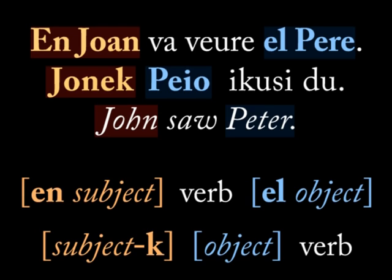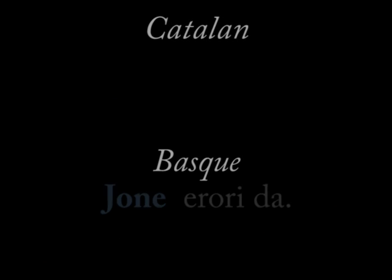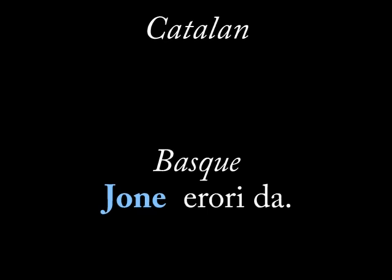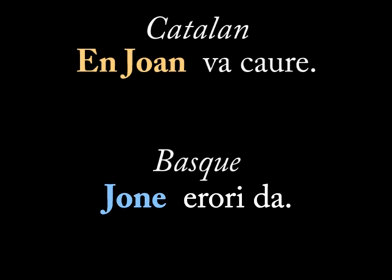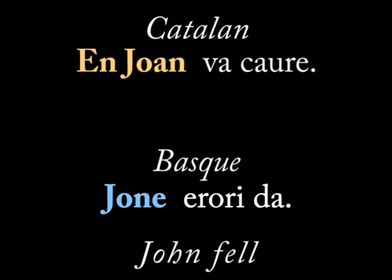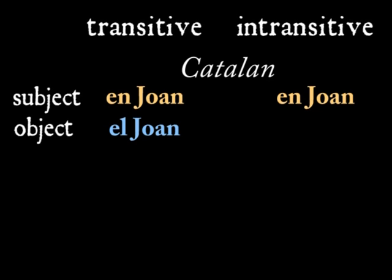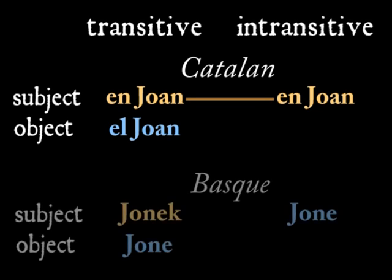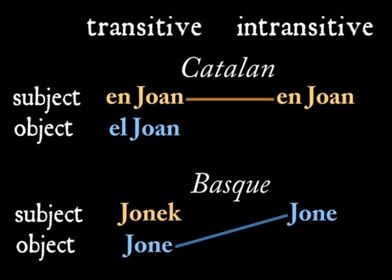But something different happens when we look at intransitive verbs in the two languages. In Basque, let's use the example of 'John fell' in English. In Catalan, the subject of this sentence works exactly like the subject of the transitive sentence. In Basque, it works exactly like the object of the transitive sentence.